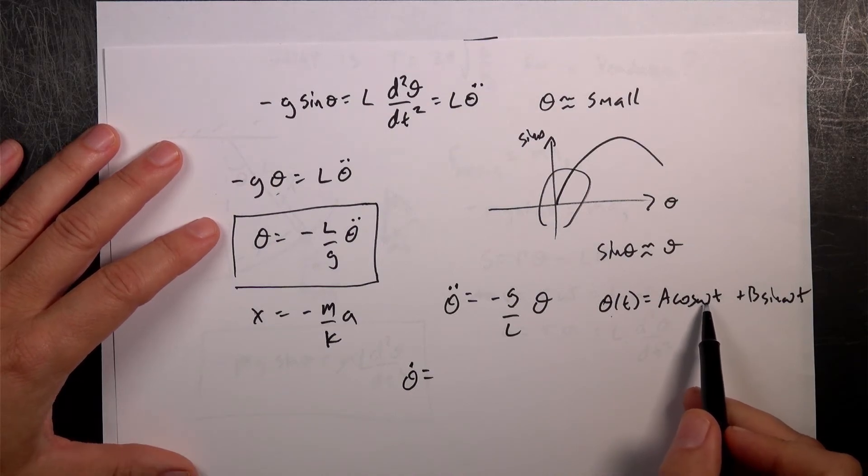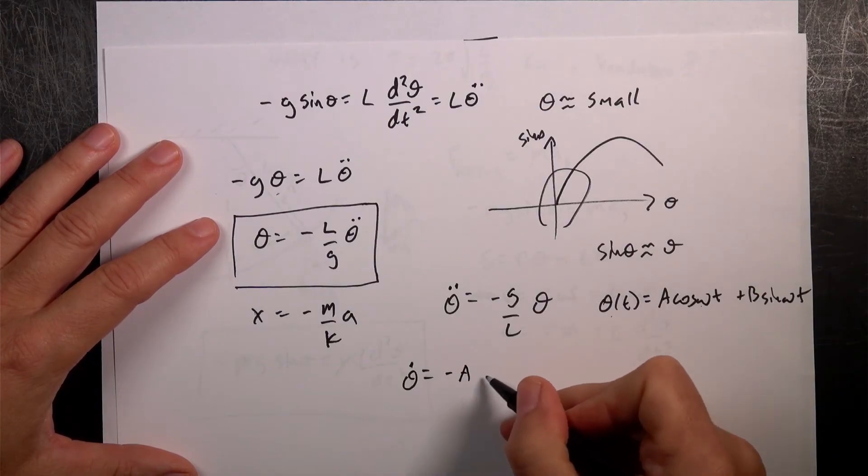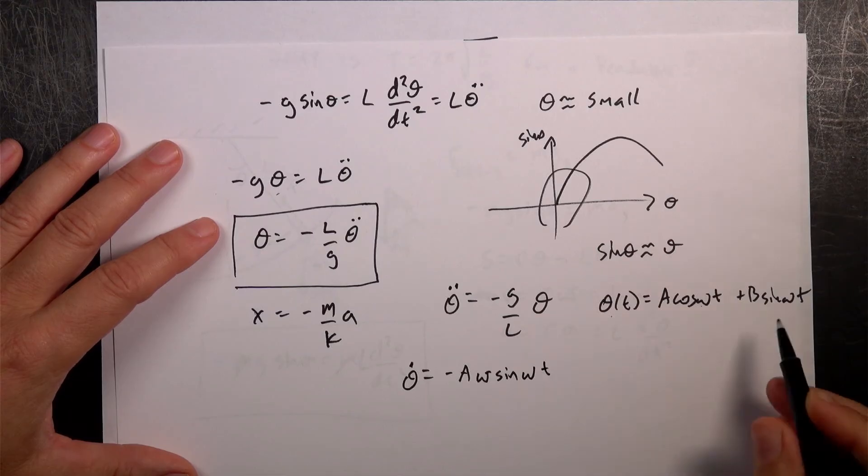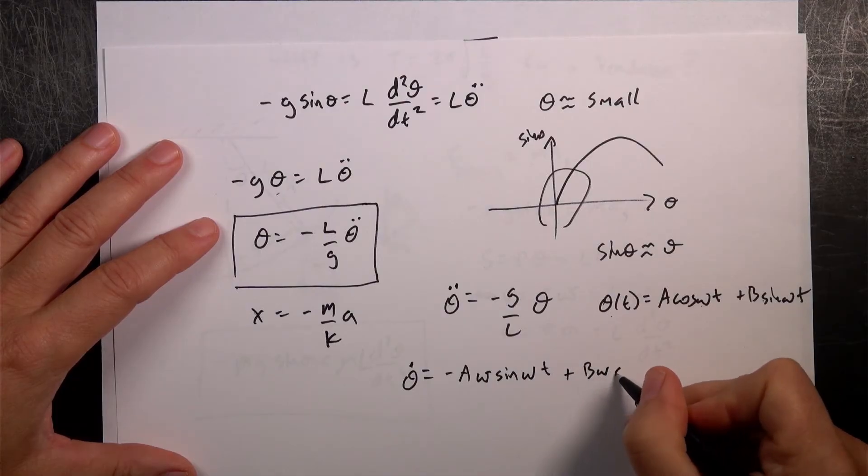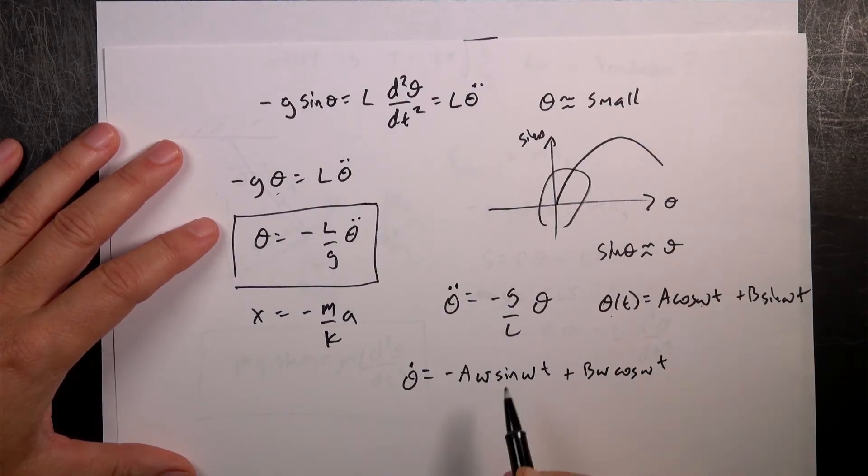The derivative of omega t is omega. So, I get negative A omega sine omega t. The derivative of sine is cosine, but I have to take the derivative of the inside. So, I get plus B omega cosine omega t.